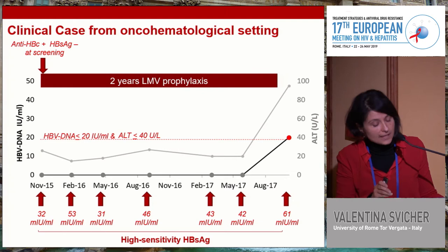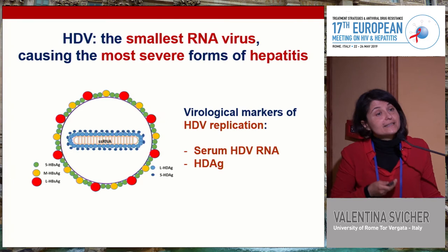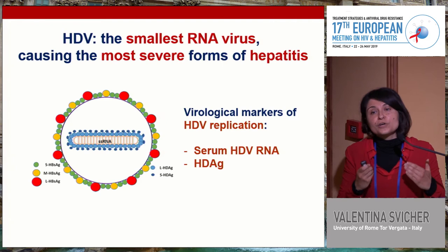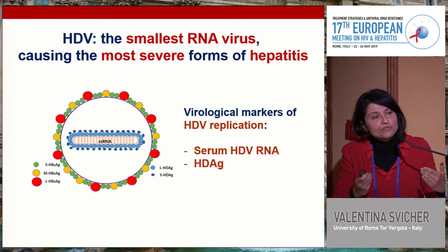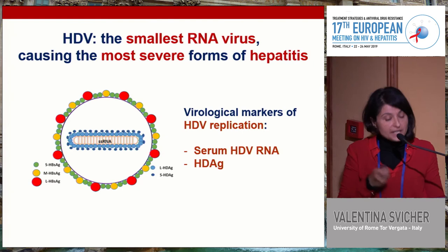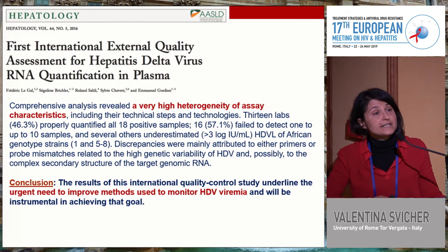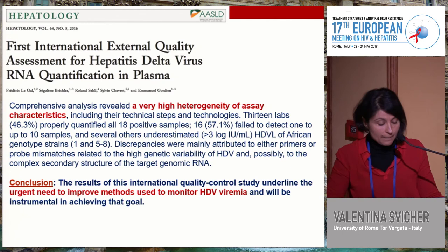Finally, we can discuss the issue of Delta virus — the smallest RNA virus causing the most severe forms of hepatitis. In this setting, we cannot yet talk about novel biomarkers since we should first improve the classical ones for viral replication. Regarding quantification of serum HBV RNA, one study highlights the urgent need to standardize the assays, given the high heterogeneity among them.